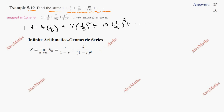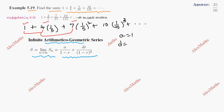This is an infinite arithmetic-geometric series. The sum formula is: a by (1 minus r) plus dr by (1 minus r) whole square. In this series, a is the first term which is 1. For the arithmetic part, the common difference d is 3. r is the geometric ratio, found by dividing a term by the previous term, giving r equals 1 by 5.